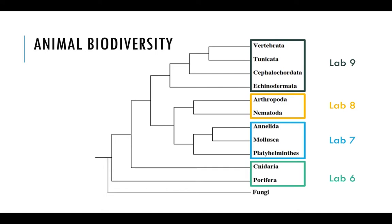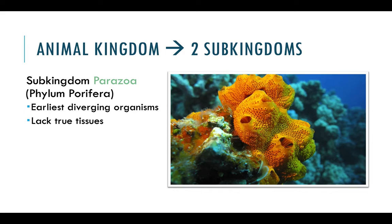So we're going to start talking about animal biodiversity. In lab six we're going to discuss the cnidarians, which are jellyfish, sea anemones, and sea fans, and then we're also going to talk about Porifera first — Porifera are our sponges. We're going to have some dissections and opportunities to come into lab in person. I believe we're just going to do labs eight and nine in person, so there are no in-person opportunities this week or next week.